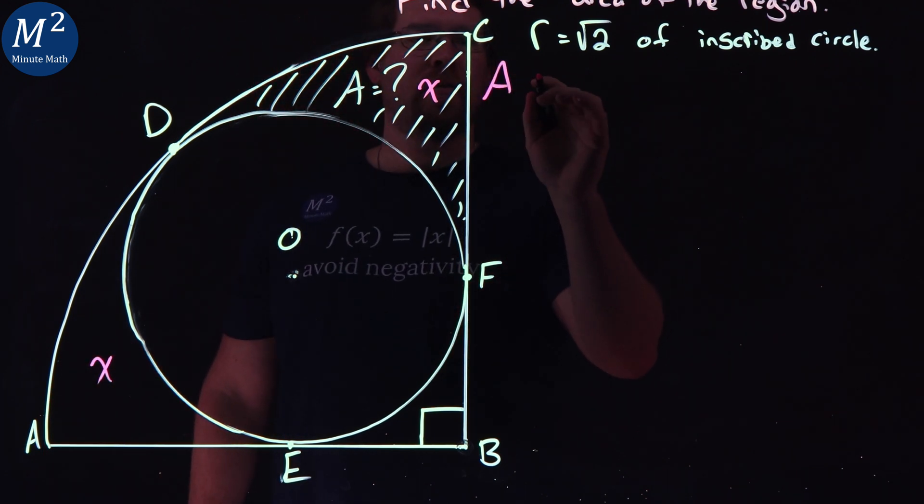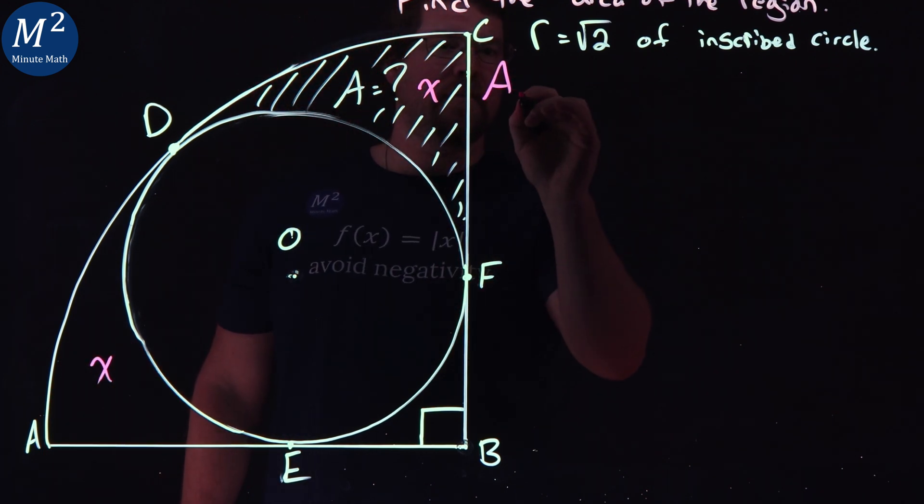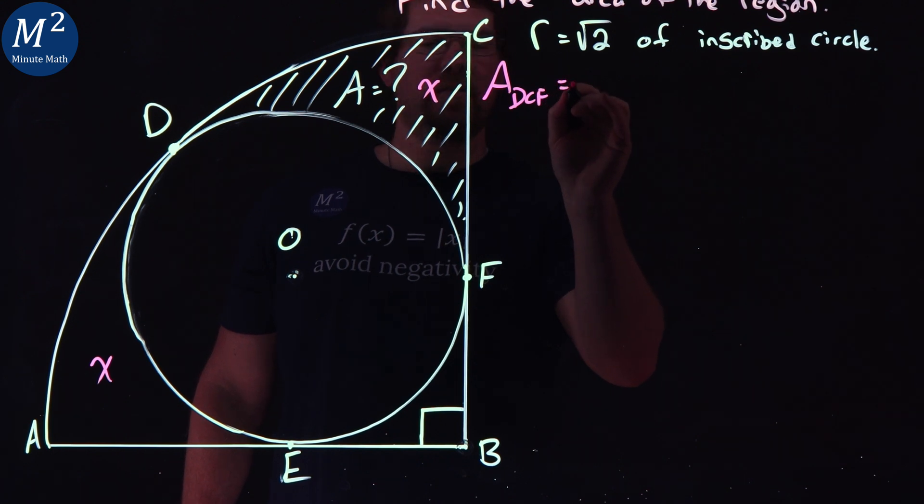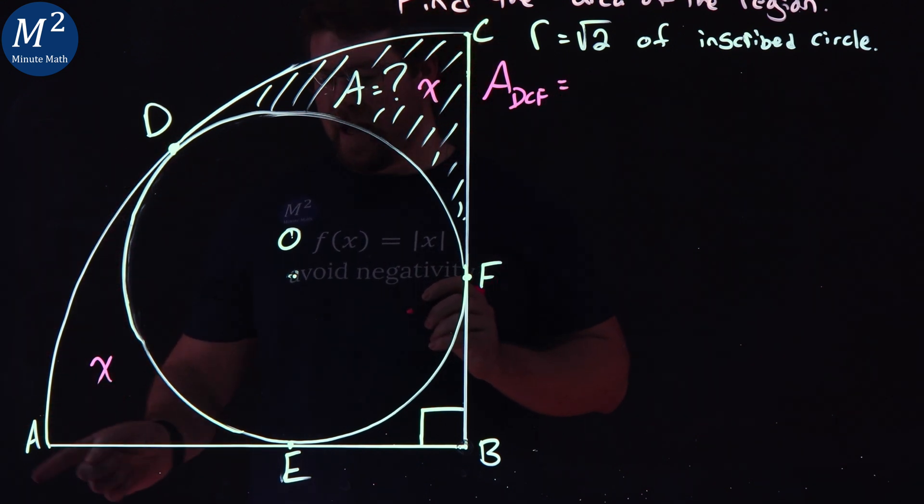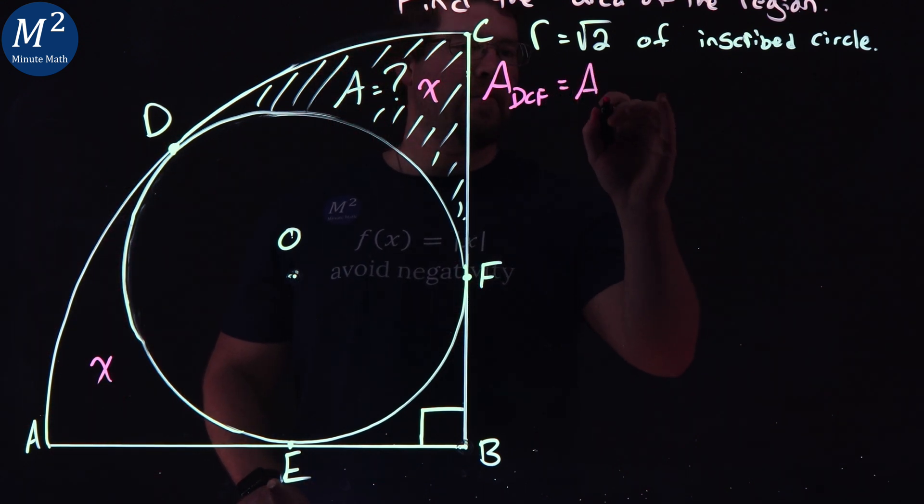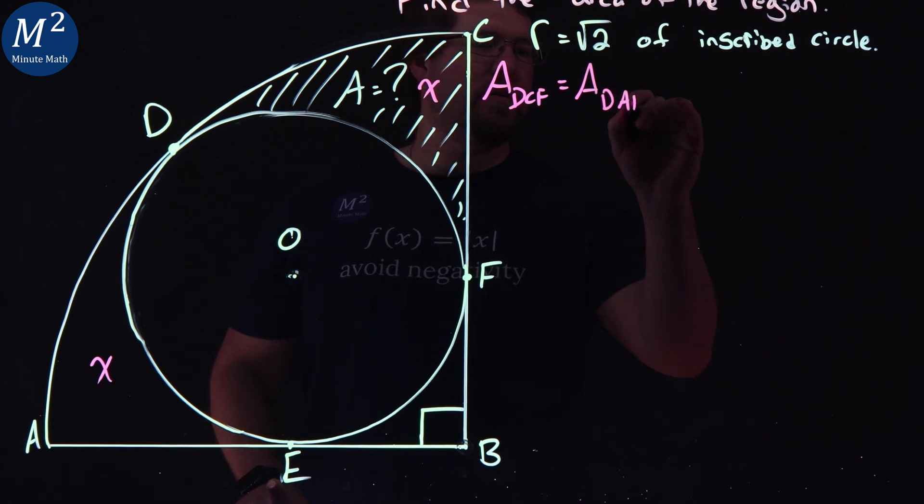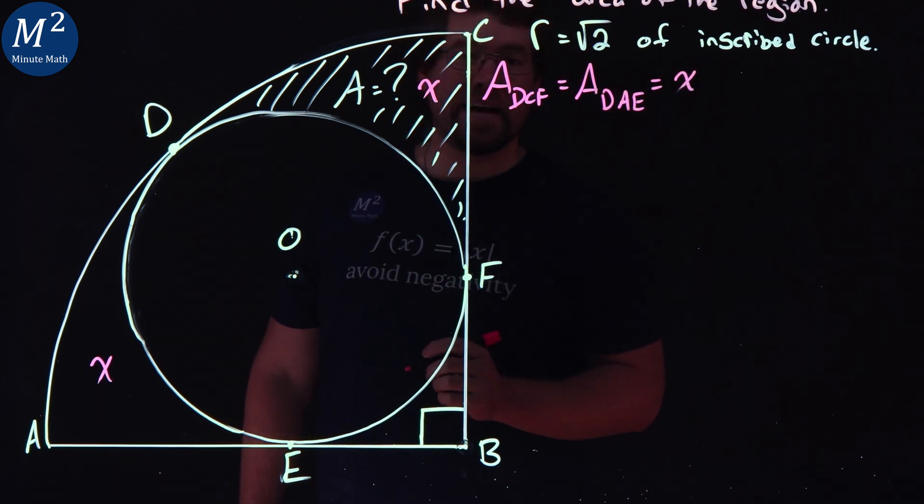So the area of our region DCF, kind of this little thing here, is equal to our area of DAE, that region. And I'm going to call it X.